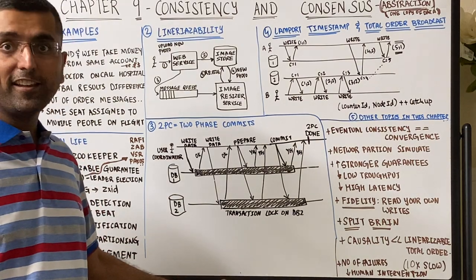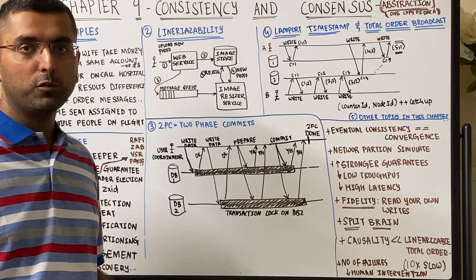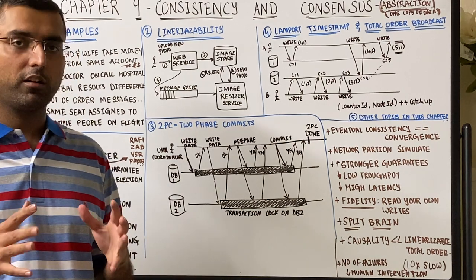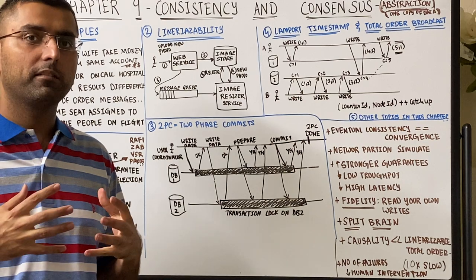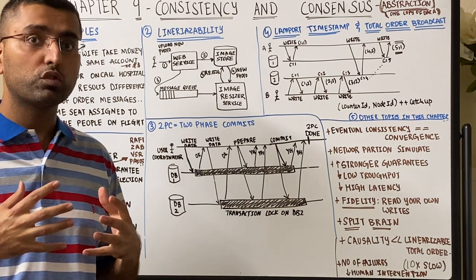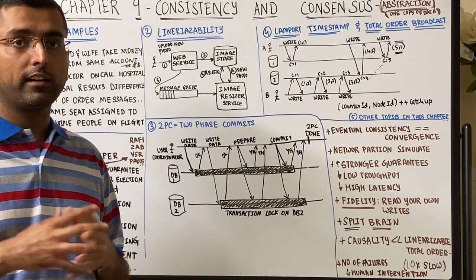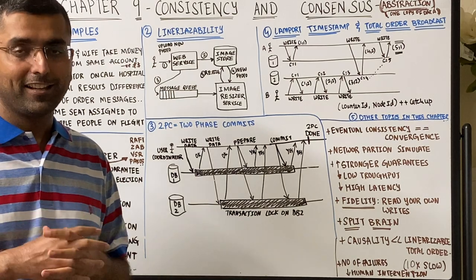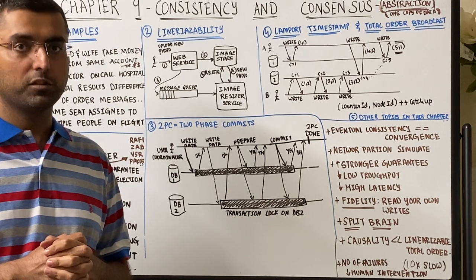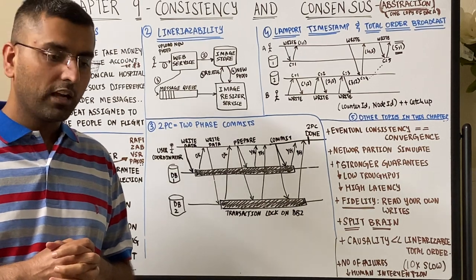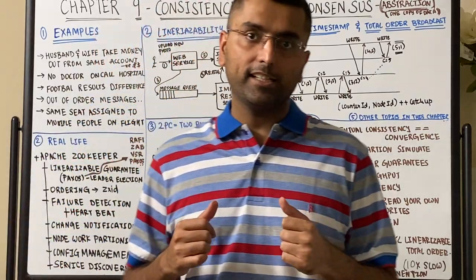Chapter 9: Consistency and Consensus. So far in the last few videos we learned a very important concept of transaction as an abstraction that application developers use. Similarly in this video we're going to learn about yet another abstraction called consensus, and this is something that we heavily need to depend on when we use distributed systems. Let's take some examples to understand when consensus is needed.